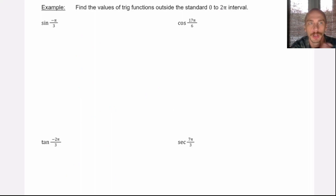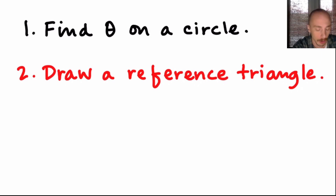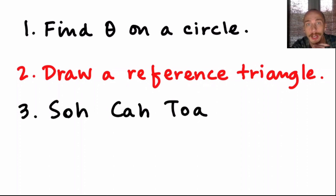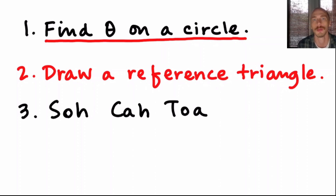Now we're really going to get to it — finding the values of the trig functions outside the standard 0 to 2π interval. I'm going to remind you of our three-step process: start by finding the location of the angle on a circle, then draw a reference triangle — typically the most important step — and then do SOH-CAH-TOA on that reference triangle. When we're outside of 0 to 2π, finding θ on the circle requires some effort, and our technique is to find a coterminal angle that we're familiar with and go from there.